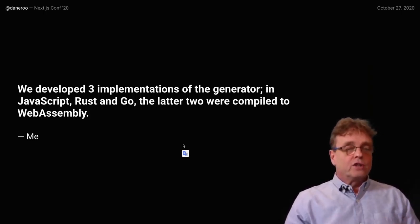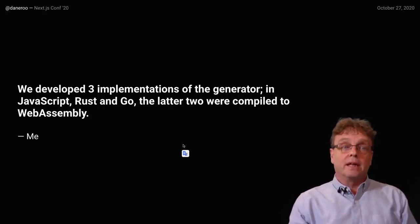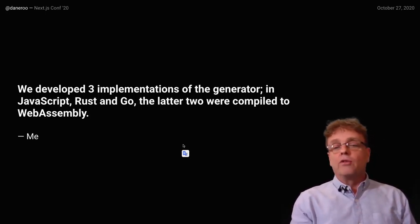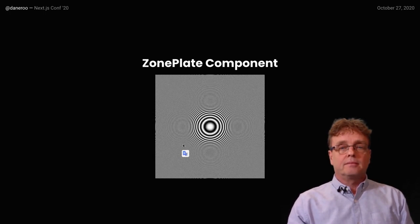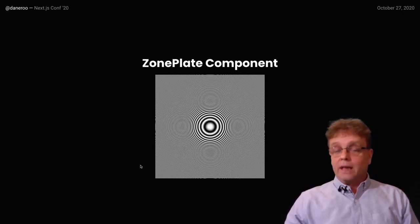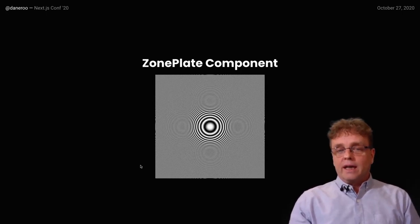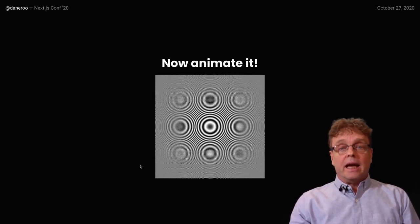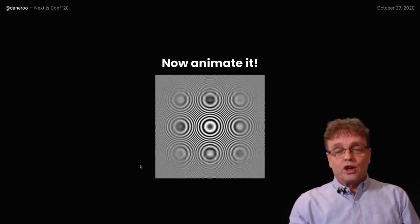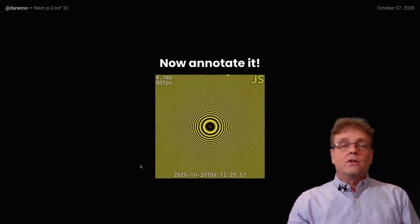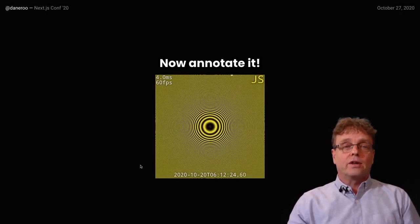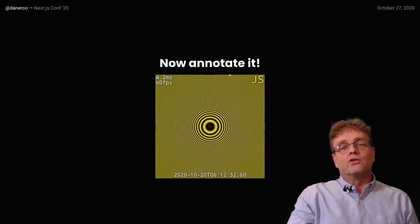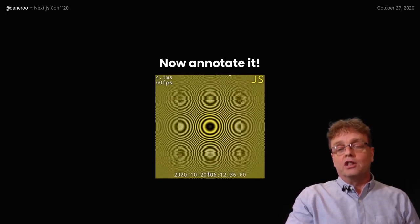We have this rendering function that computes our image, and three parallel implementations of it. The last two — Rust and Go — have been compiled to WebAssembly, so now we can invoke all three functions from JavaScript interchangeably. We turned that into a React component by creating a Canvas 2D, invoking the renderer, and now we have our pattern. The next thing I did is animate this, and I also added an annotation overlay showing the language of the renderer, its frame rate, the timestamp, and the actual rendering time in milliseconds.